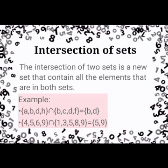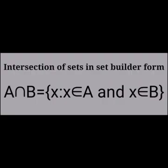Intersection of sets: The intersection of two sets is a new set that contains all the elements that are in both sets. A intersection B is equal to {x : x belongs to A and x belongs to B}.